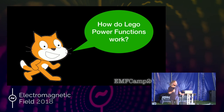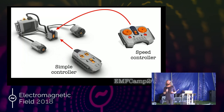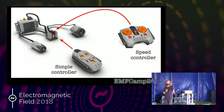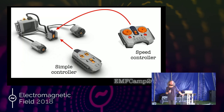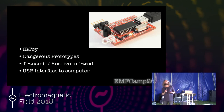How do Lego Power Functions work? They use infrared controllers — a simple controller has forwards and backwards for the red channel and the blue channel, and a speed controller has rotary dials to adjust speed or go into reverse for two different channels. They talk to an infrared receiver that controls motors or lights. We want to control this from Scratch, so I needed to listen in to the infrared communication between the controllers and Lego to work out how it works.